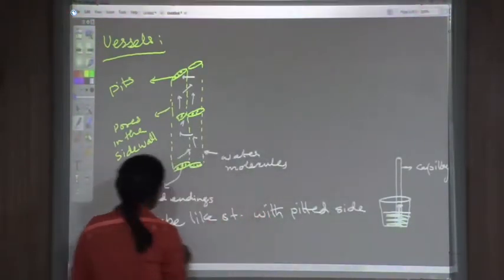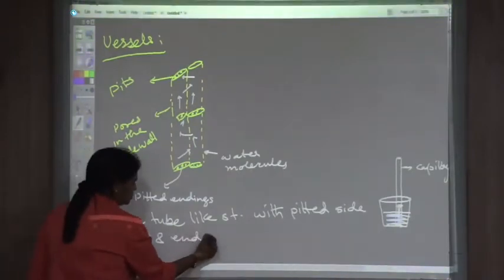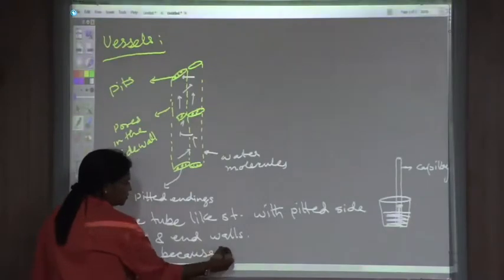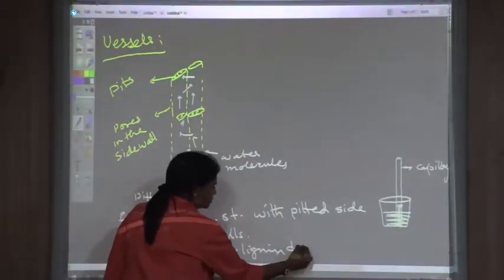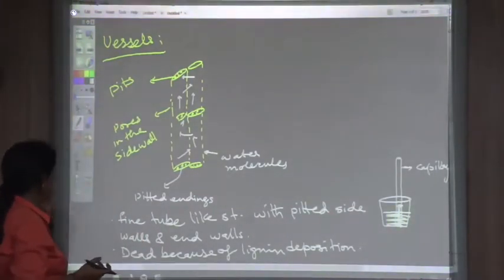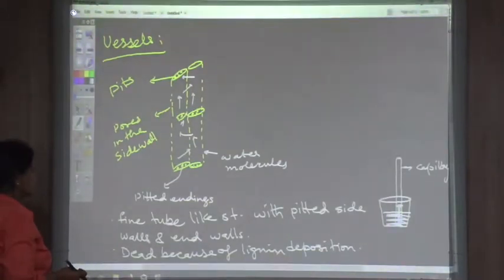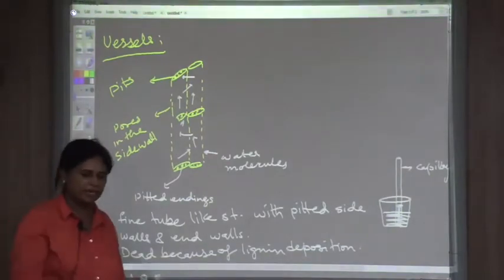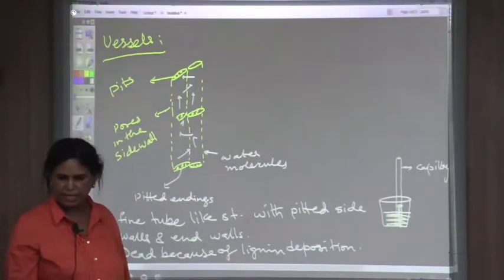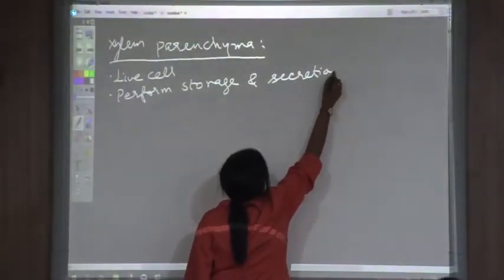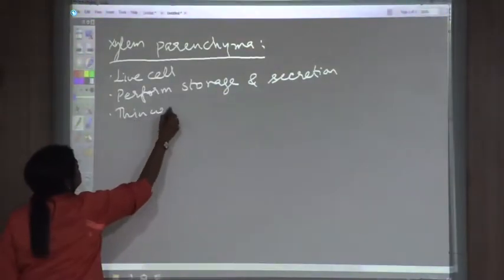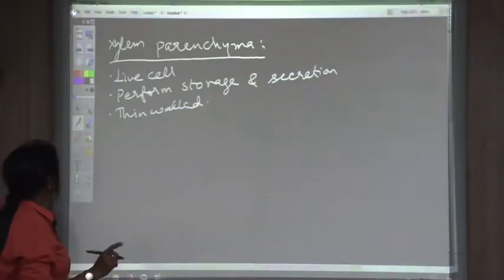Vessels have lignin in the wall which makes them dead tissue. They have pits all over the side wall and end plates so water can move through. The lignin deposition also provides mechanical support, making the wall tough and strong. Xylem parenchyma are the live cells — they perform storage and secretion functions. They are thin-walled and are the only live cells within the whole xylem tissue.